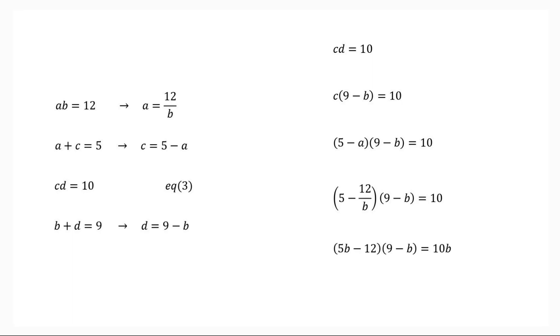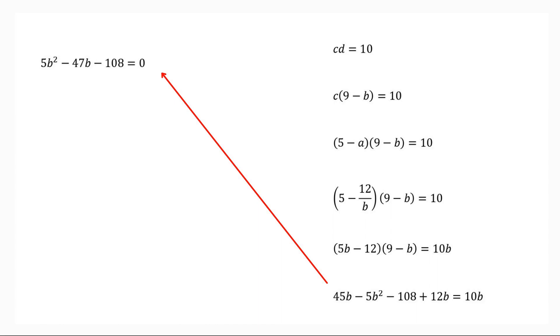Multiply with B. Then we get 5B minus 12 into 9 minus B equals 10B. Or 45B minus 5B square minus 108 plus 12B equals 10B. We can rearrange these equations. Then we get 5B square minus 47B minus 108 equals 0.